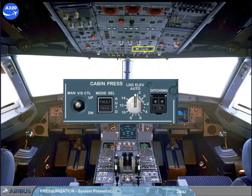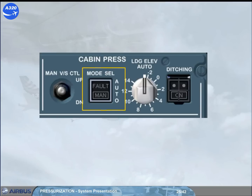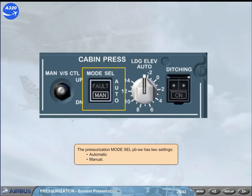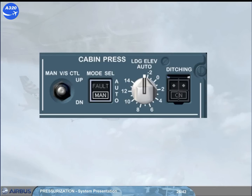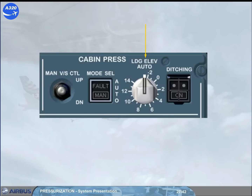On the overhead panel, there is a cabin pressure panel containing controls to operate the pressurization system. Under normal conditions, no pilot action is required on this panel during flight. The pressurization mode selector push button switch has two settings: automatic and manual. The normal position is lights out, in which the pressurization system is in automatic mode. The landing elevation selector normally remains in the auto position, where landing elevation is provided by the FMGS based upon the elevation of the destination airport. If the landing elevation is not available from the FMGS, it can be set manually using this selector.